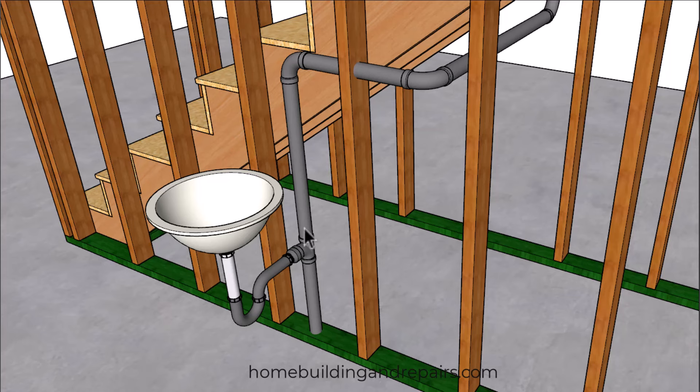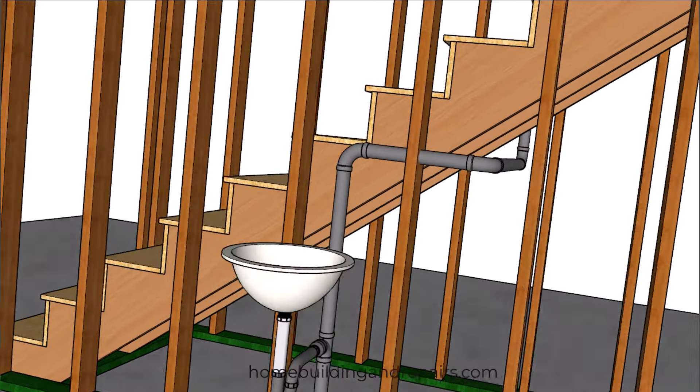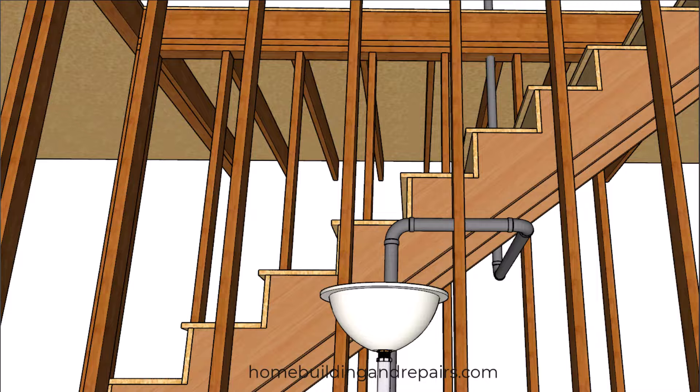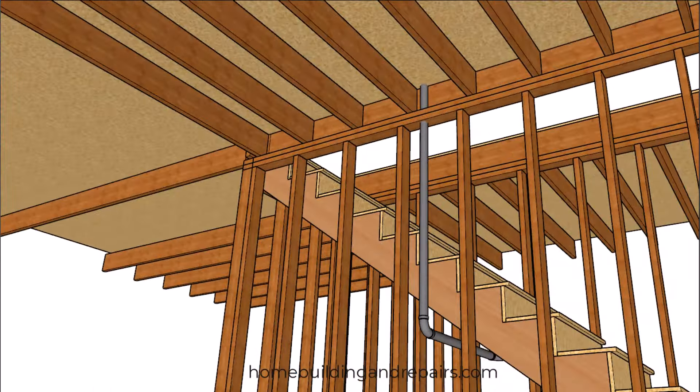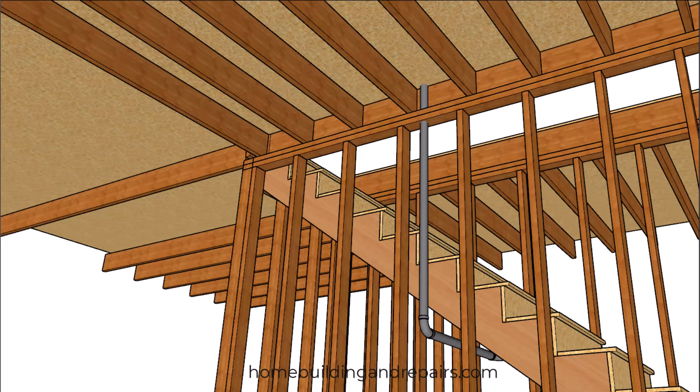So number one on the list will be going underneath the stairway that does not have a closet and you can run the pipes without damaging the stringers under those stair stringers like we have done here. And if this area is not going to be accessible then the pipes can run underneath the stringers anywhere in that area as long as it meets your local plumbing codes.